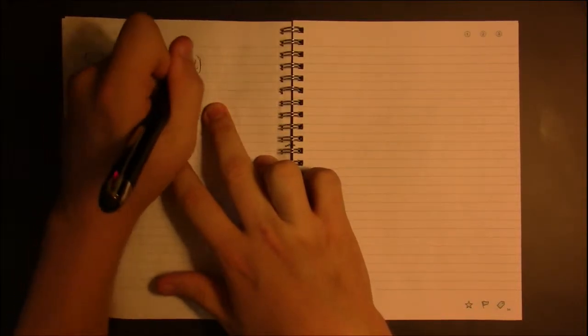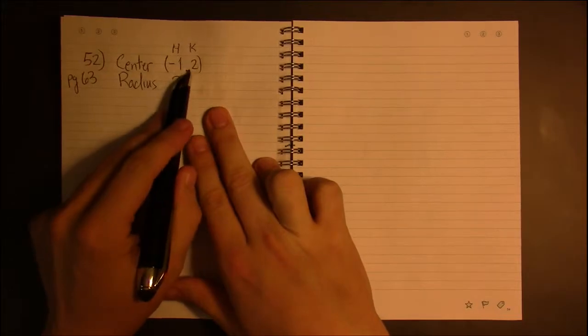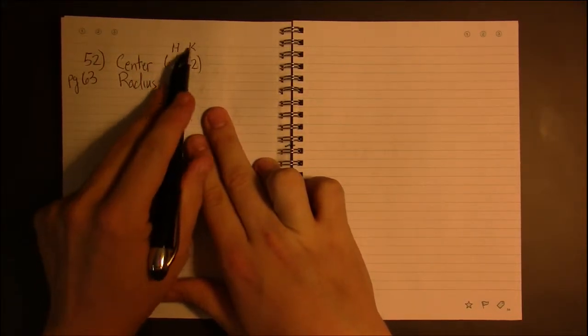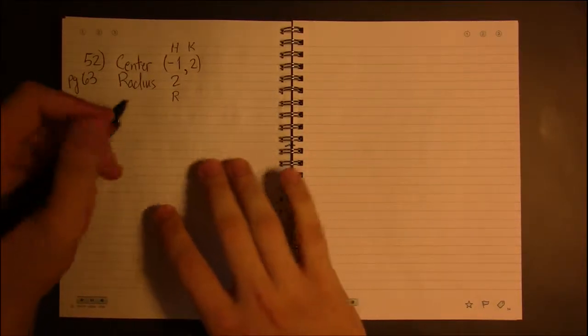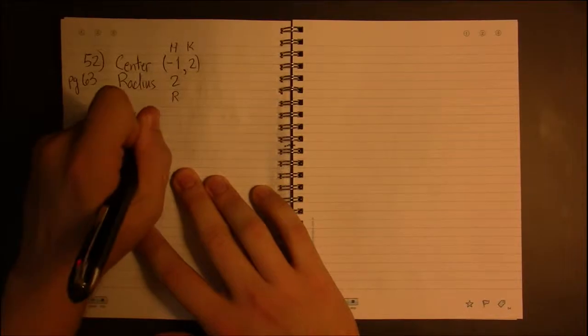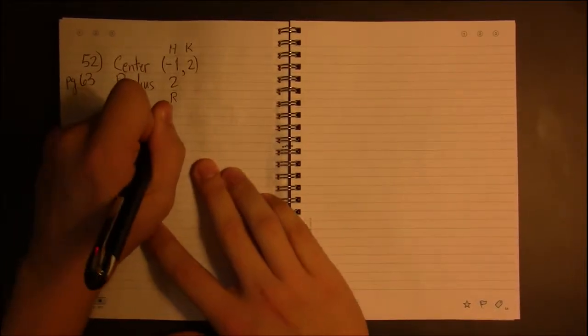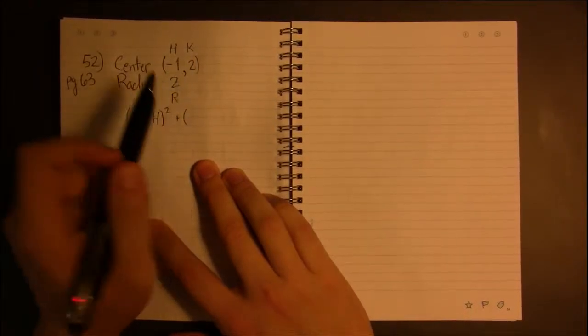The center is the point HK, so the X coordinate is H, the Y coordinate is K. Minus one is H, two is K, and the radius is R. So we just use the standard form and plug in for H, K, and R.